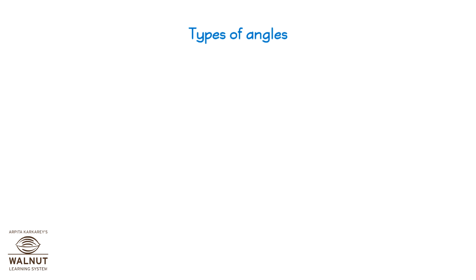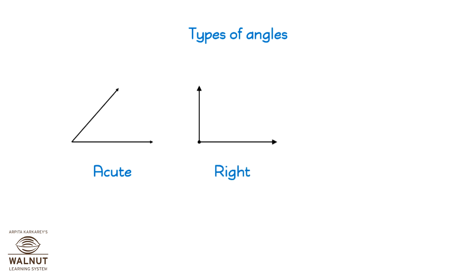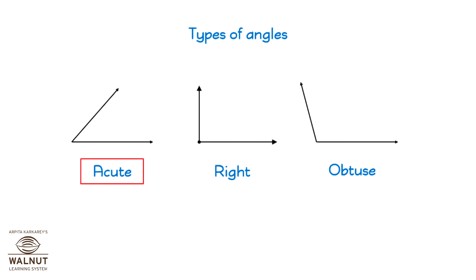So, there are three kinds of angles that we have seen: an acute angle, a straight angle, and an obtuse angle. Here is a trick to remember which one is bigger than a right angle and which one is smaller. An acute angle is smaller than a right angle. Remember the word 'cute' in acute — small things are cute, so the smaller angle is called the acute angle. What is left? The obtuse — that is the bigger angle.